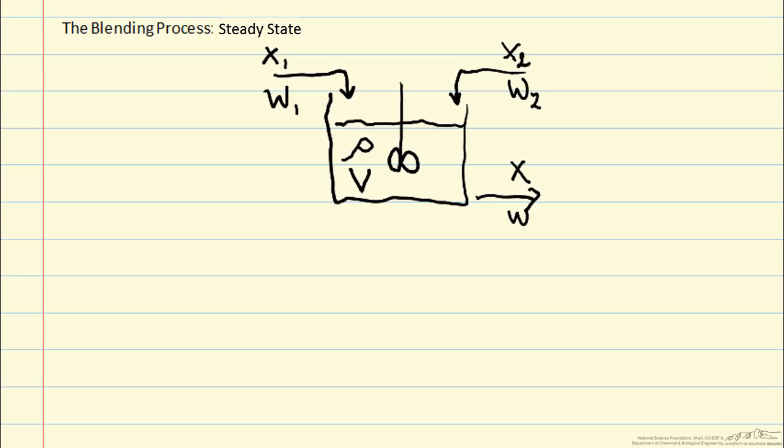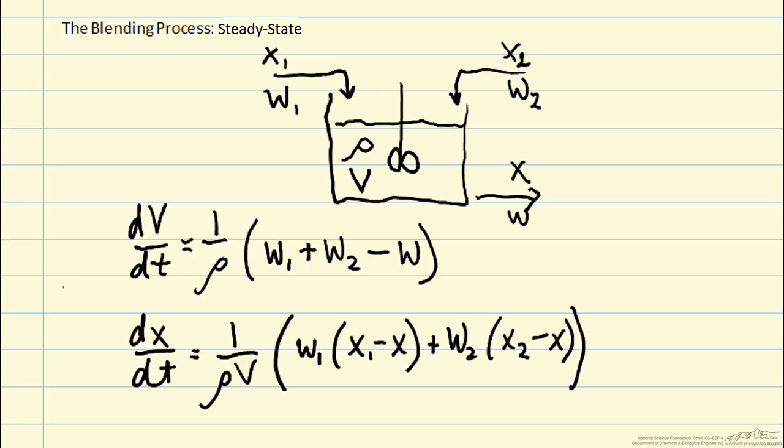Then we wrote a dynamic model for the process, which was based on a total mass balance. And then we had a second mass balance based on species balance for A in the tank. And together, this is a dynamic model that describes the system.